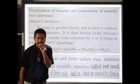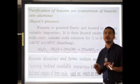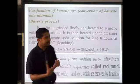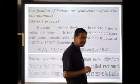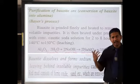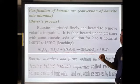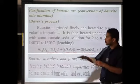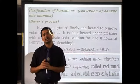The insoluble substance left behind is called red mud. Red mud consists of ferric oxide, sand, and titanium oxide. These impurities — ferric oxide, titanium oxide, and sand — can be removed by dissolving the ore in concentrated sodium hydroxide solution. The impurities are then removed by filtration after allowing the mixture to cool.